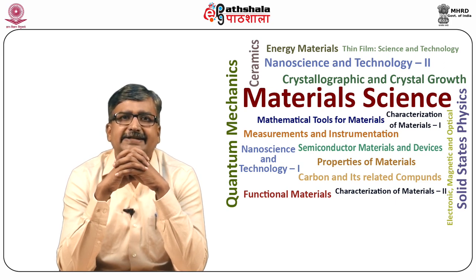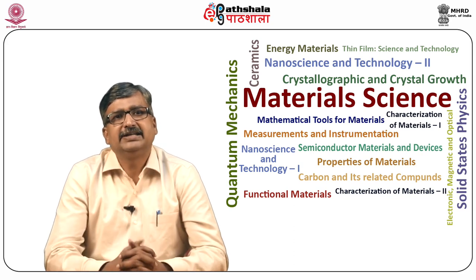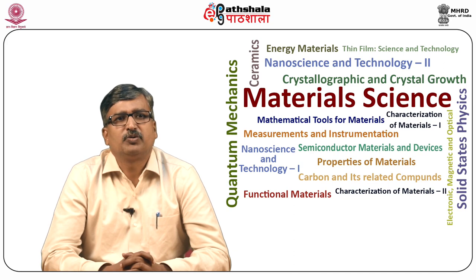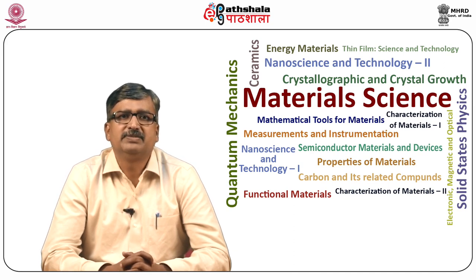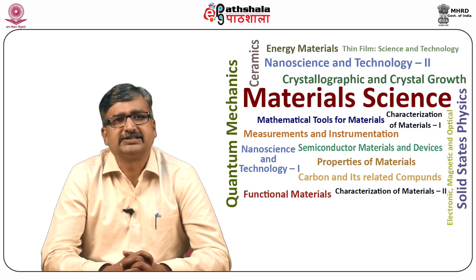The scanning electron microscope is used for observation of specimen surfaces. When the specimen is irradiated with a fine electron beam called an electron probe, secondary electrons are emitted from the specimen surface. The topography of the surface can be observed by two-dimensional scanning of the electron probe over the surface and acquisition of an image from the detected secondary electrons.